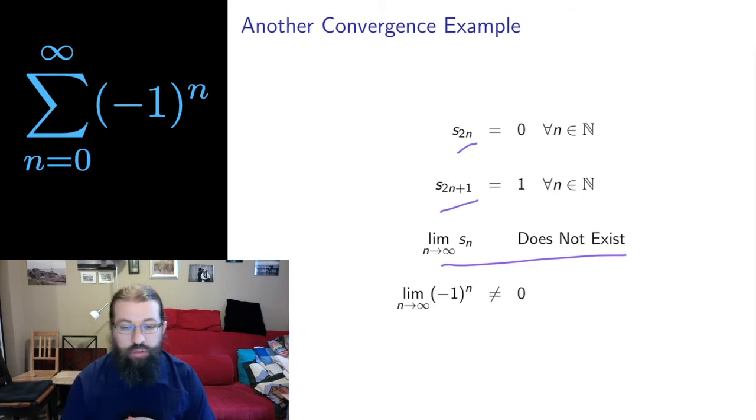Alternatively, we could have used the test for divergence. If we look at the limit of the terms, the terms of the series is negative 1 to the n, these do not approach 0. They oscillate between positive and negative 1. The test for divergence says that the limit of the terms must be 0 for convergence. So since the limit of the terms is not 0, we cannot have convergence.